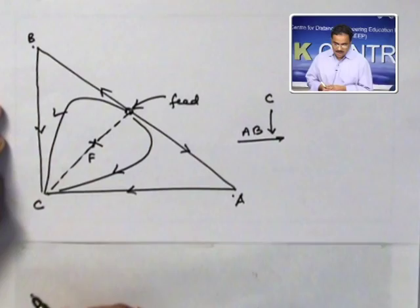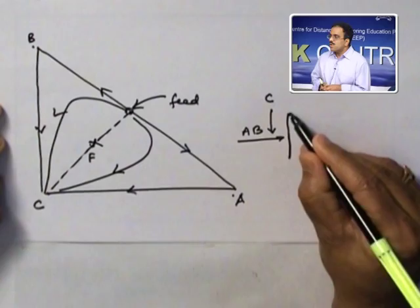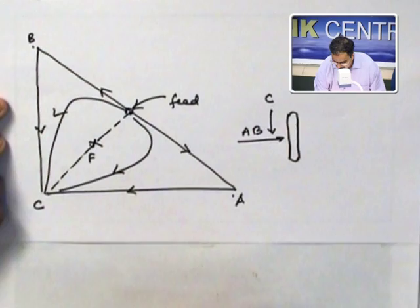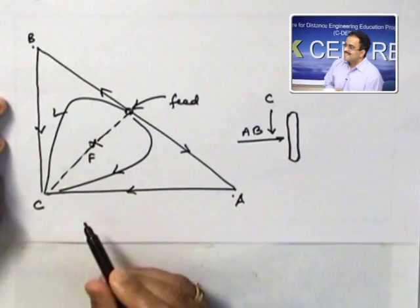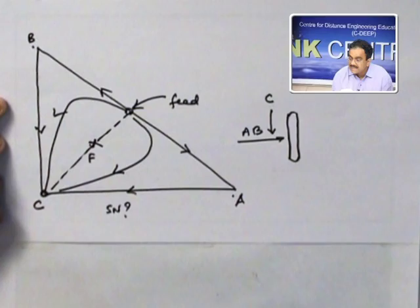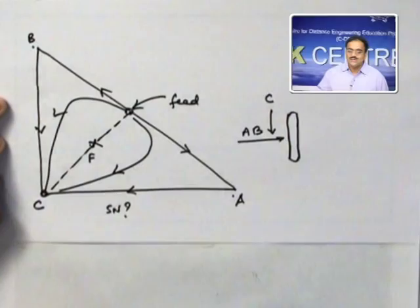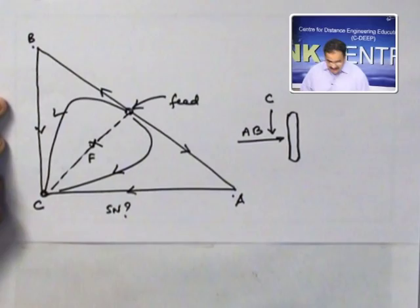What is the next step? Suppose this overall feed goes to the column — look for either stable node or unstable node which will come out from either top or bottom. Now, in this diagram, which is a stable node? C. Am I interested in C? I am not interested in C. So what is the use? There is no point in separating C — anyway, I am adding C in pure form.